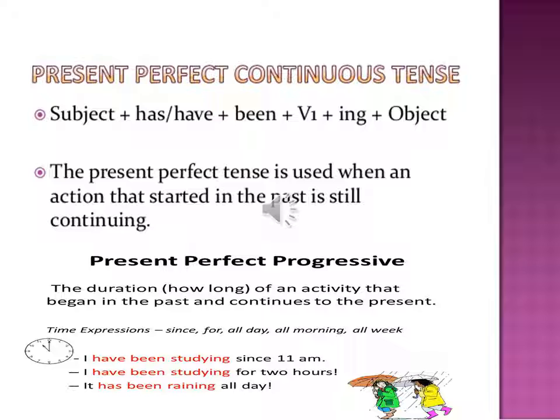And 'for' is used to refer to a period of time. For example, for two hours, for two months. Now let us see examples of Present Perfect Continuous Tense.